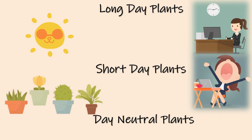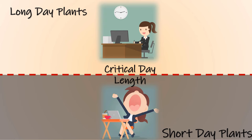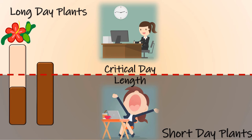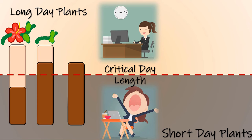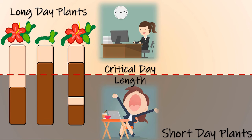Long day plants like to work for a long day, so when the daytime is more than the nighttime we see flowering. But since they do not like big rest times, there is no flowering if the nighttime is more. However, if the long nighttime has a small period of productive time — that is, a small light period in between — long day plants do give flowers. This interruption of night with a flash of light is called a night break.